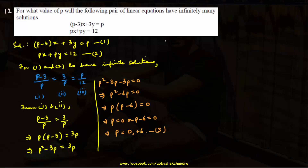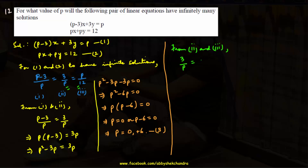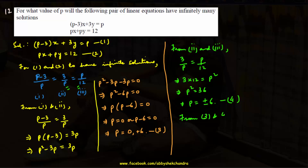From ratios 2 and 3: 3/p = p/12, so 36 = p², giving p = ±6. The common value from both conditions is p = 6, so the answer is p = 6.